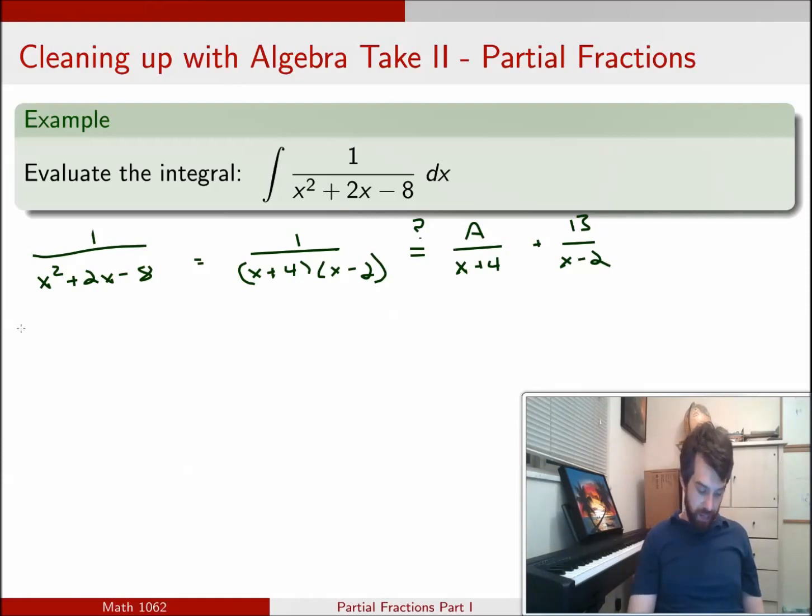So my technique here is I'm going to multiply by x plus 4 times x minus 2, and what that's going to give me is 1 is equal to A times x minus 2, if I multiply by both of them the x plus 4 cancels, plus B times x plus 4, if I multiply by both of them the x minus 2 they're going to cancel.